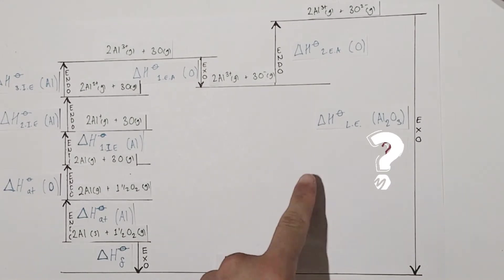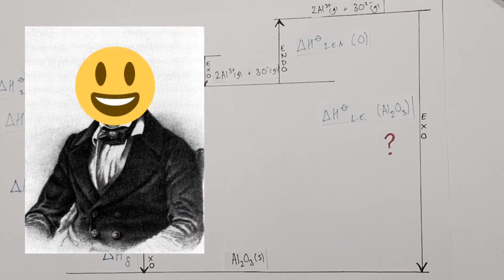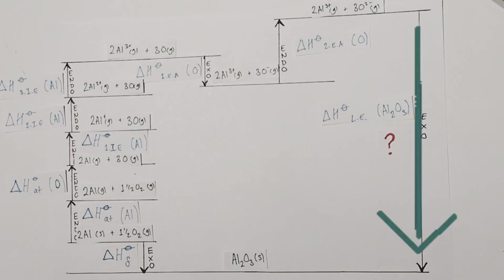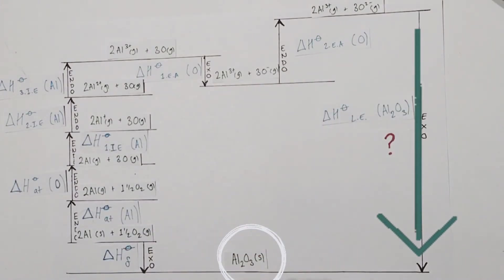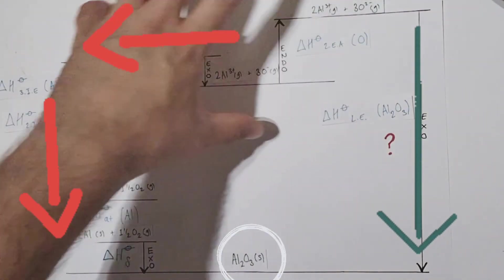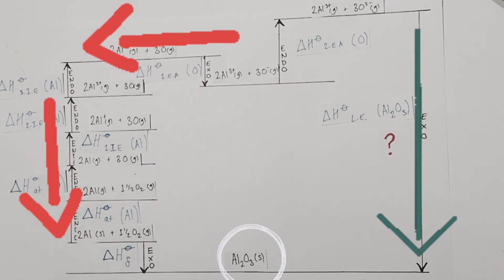This leaves us with an unknown lattice enthalpy, defined as the enthalpy change for the formation of one mole of an ionic compound — a giant ionic lattice — from its constituent ions in their gaseous state. This is where we use Hess's law to our advantage. Hess's law states that the enthalpy change of a chemical reaction is the same independent of the route taken. If we make the lattice enthalpy route one and take an alternative route around our Born-Haber cycle to the same endpoint of Al2O3, the total enthalpy change of that alternative route will be identical to the lattice enthalpy, and we will have solved our unknown.